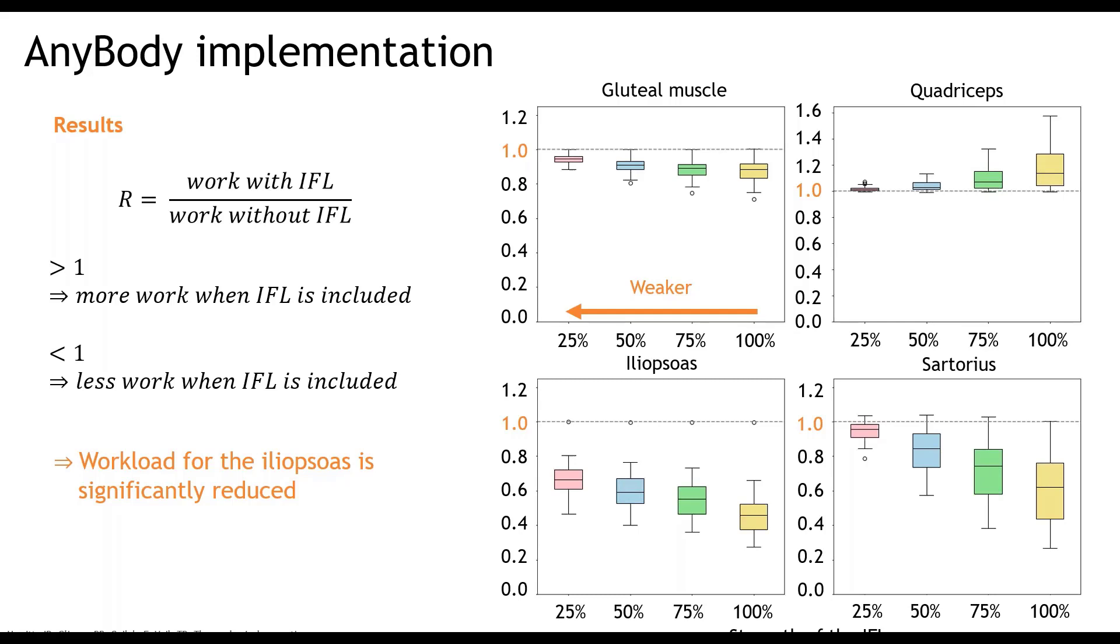On the right side of the slide, I plotted box plots for four different muscle groups. At the upper left, you find the gluteal muscles. At the upper right, you find the results for the quadriceps, lower left for the iliopsoas, and lower right for the sartorius. On the x-axis, I plotted the parameter study. So the 100% indicates that we used the mean strength found by Hewitt and his colleagues. The more you move to the left, the weaker the implemented IFL gets. So we have the 25, 50, and 75 percentage strength cases. What you can clearly see from these figures is that for the iliopsoas, the workload is significantly reduced in all strength cases. The same accounts for the sartorius, except for the 25 percentage strength case. For the other two muscle groups, the effect is less significant.